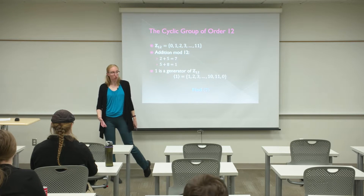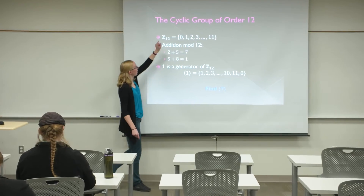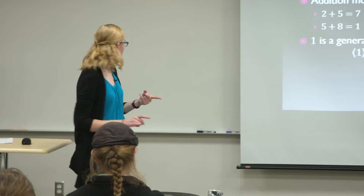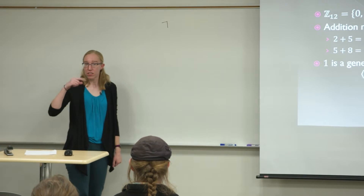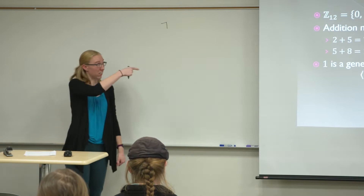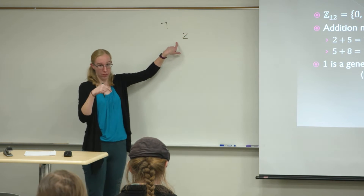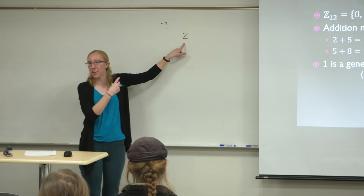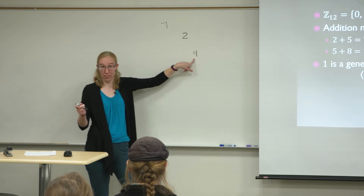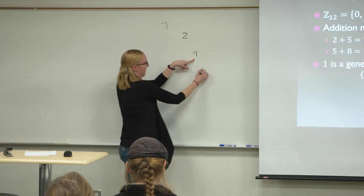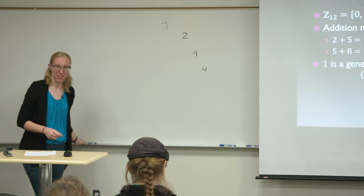Let's find the cyclic group generated by 7 in Z12. The first element is 7. Seven times two is 14, but in Z12 that's 2 — think 14 minus 12. Then 2 plus 7 is 9. Nine plus 7 is 16, subtract 12 — that's 4. Keep going. Does anyone need paper?